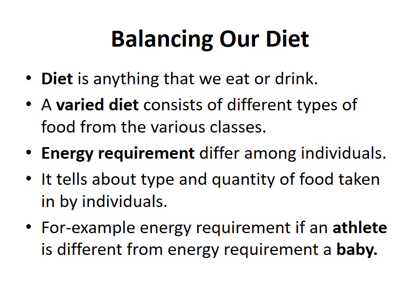We have read about all seven classes of food. Now the question is how much of each class should be in our food? Should we take in more carbohydrates, more fats, or more proteins? Diet is anything that we eat or drink. We call a diet a varied diet when it consists of different types of foods from various classes. For example, a burger contains carbohydrates in its buns, proteins and fats in the patty, and vegetables provide some fiber and important minerals and vitamins — making it a varied diet.